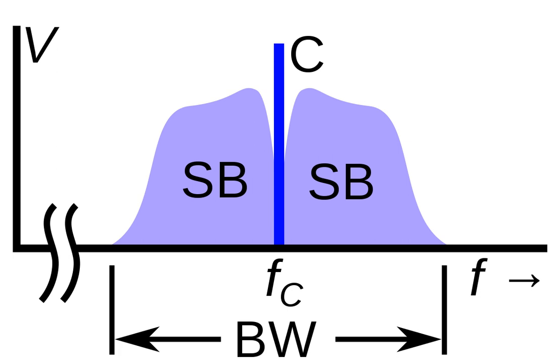In telecommunications, a carrier wave, carrier signal, or just carrier, is a waveform, usually sinusoidal, that is modulated or modified with an input signal for the purpose of conveying information.